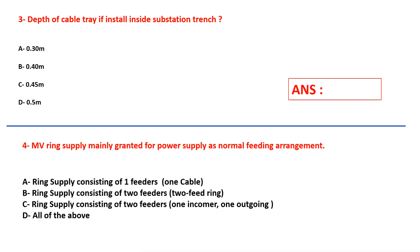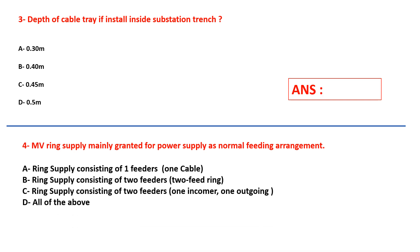Question number four: MV ring supply is mainly granted for power supply as a normal feeding arrangement. The ring supply consists of: one feeder and one cable, two feeder cables, one incoming or one outgoing cable, or all of the above? Select your answer.